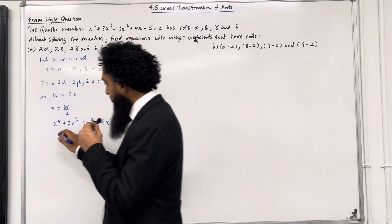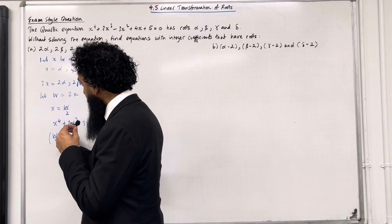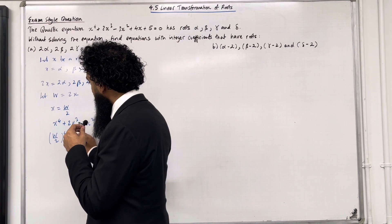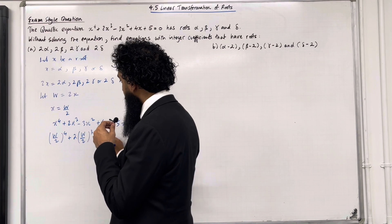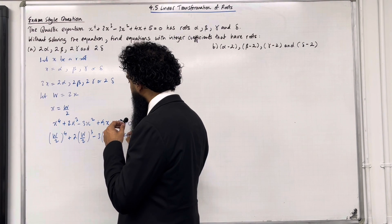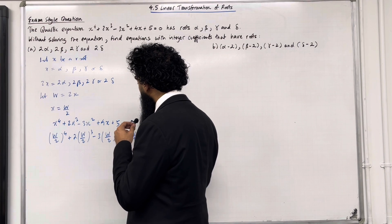So I've got (w/2)⁴ + 2(w/2)³ - 3(w/2)² + 4(w/2) + 5 = 0.